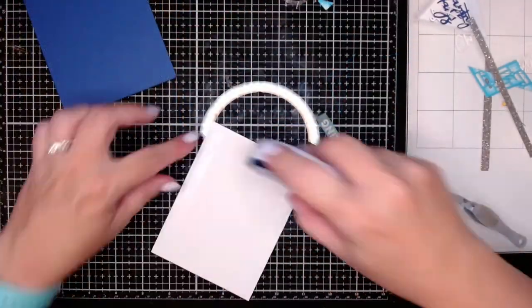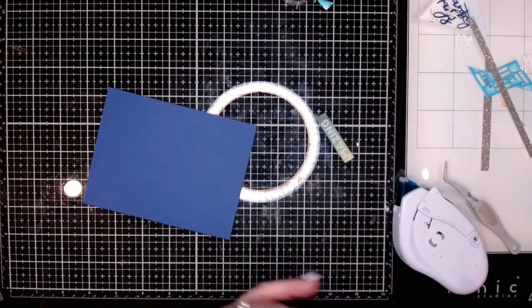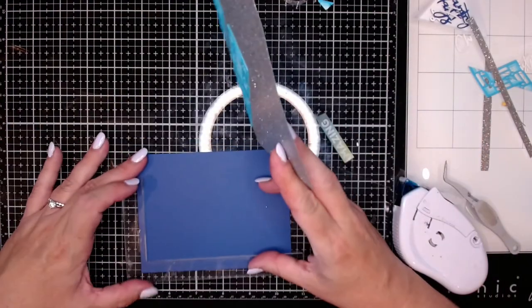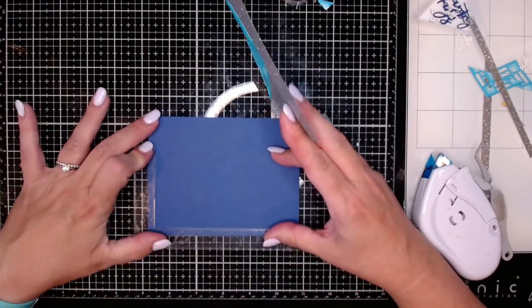Next, I'm going to adhere that panel down to a top folding, I think it's top folding, might be side folding, a blue card base. I'm just using my dot liner adhesive for this.